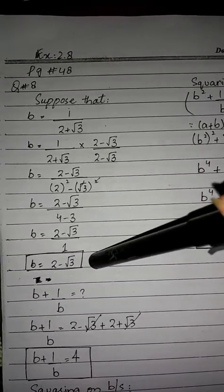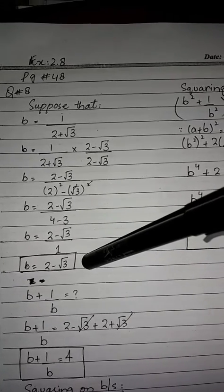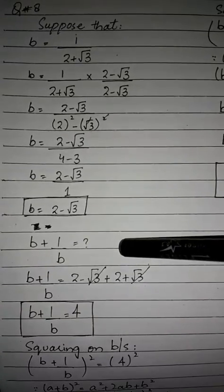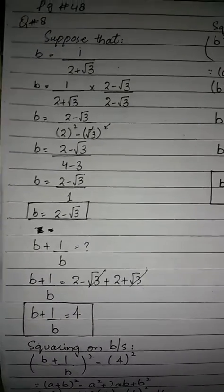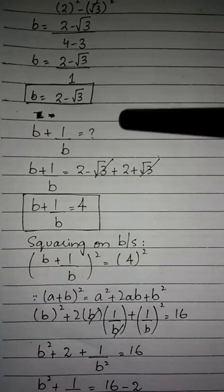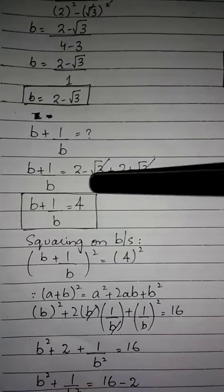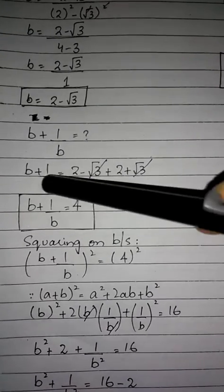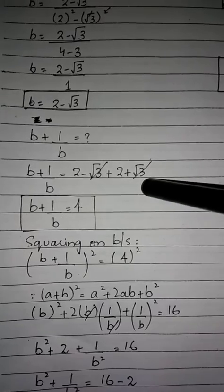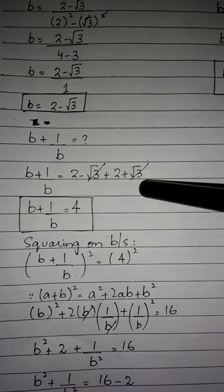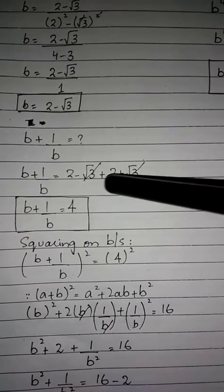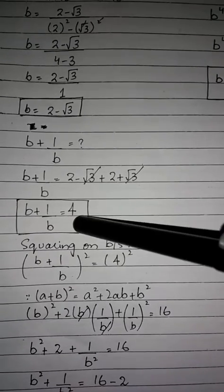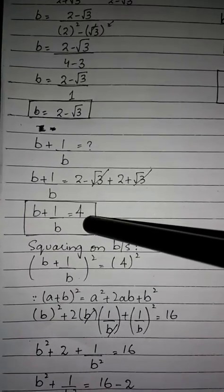So students, 1 over b equals 2 minus root 3. Now b plus 1 over b. We have b as 2 minus root 3, and 1 over b as 2 minus root 3, so 2 plus 2 equals 4. Therefore b plus 1 over b equals 4.